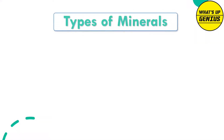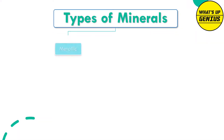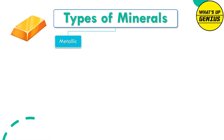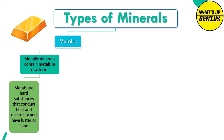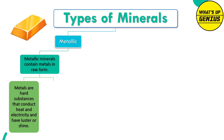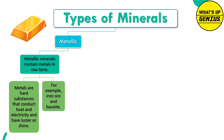Types of Minerals — Metallic. Metallic minerals contain metals in raw form. Metals are hard substances that conduct heat and electricity and have luster or shine. Examples include iron ore and bauxite.